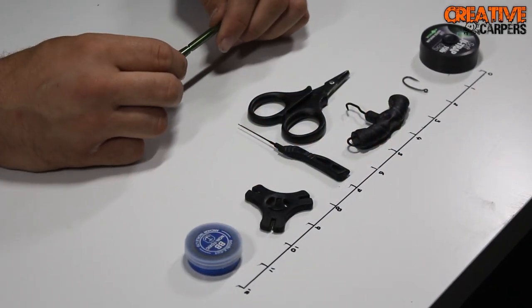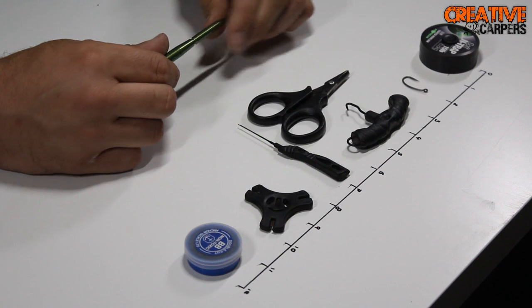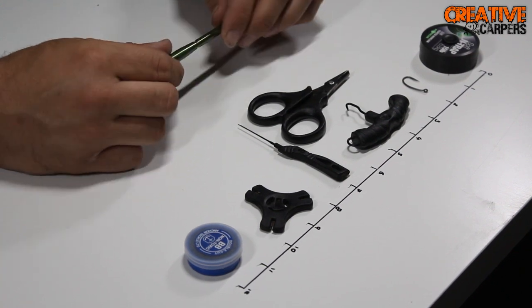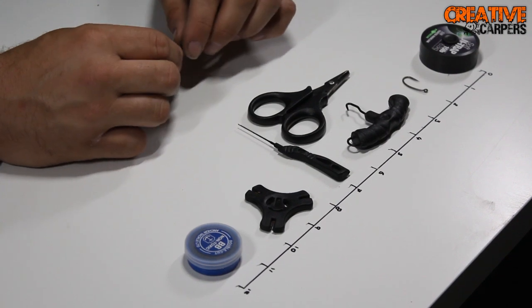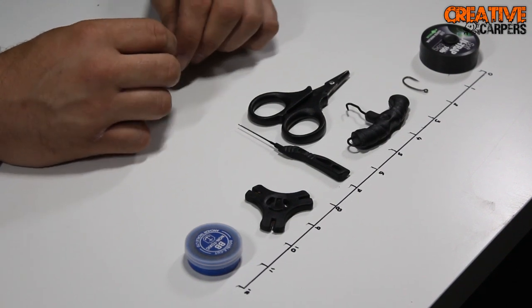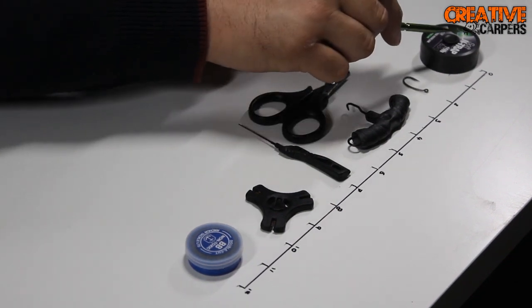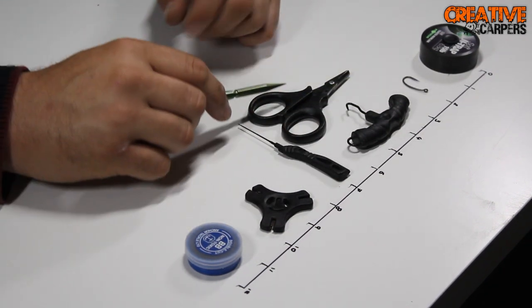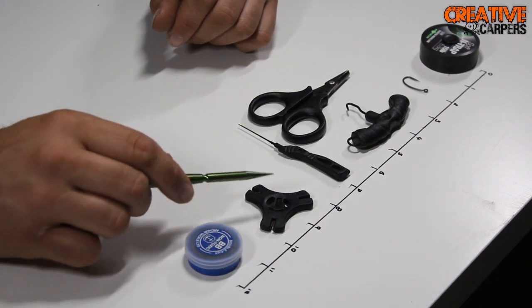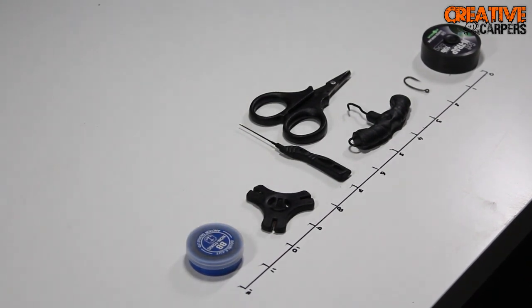Hey guys, welcome to our channel The Creative Carpers. In today's video I'm going to be talking you through how to make the KD rig. First of all, just need to go through some of the tools and components that you're going to need to make this rig: starting with some soft coated hook link, a size 6 curve shank, a puller tool, some sharp scissors, a boiling needle, a stripper tool, and some BB weights.